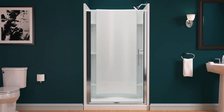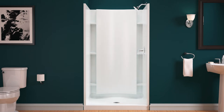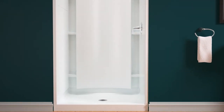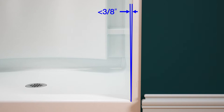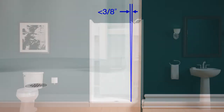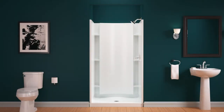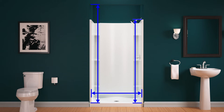Most Sterling pivot doors are reversible and can be installed to open to the left or to the right. Sterling pivot doors are also adjustable and designed to accommodate walls that are up to 3/8 inch out of plumb. The following measurements will help you determine what size door is right for your showering space.